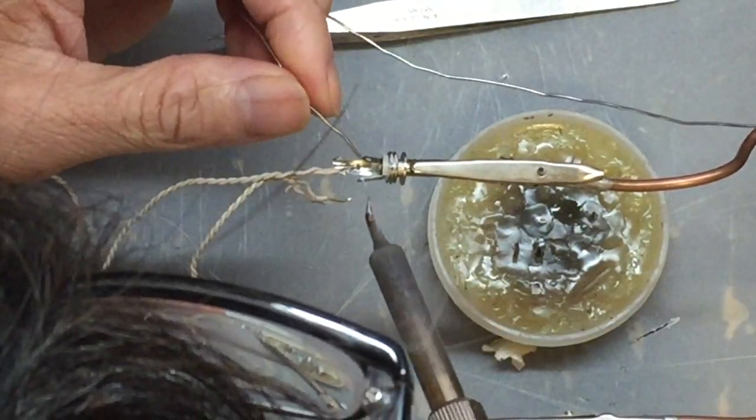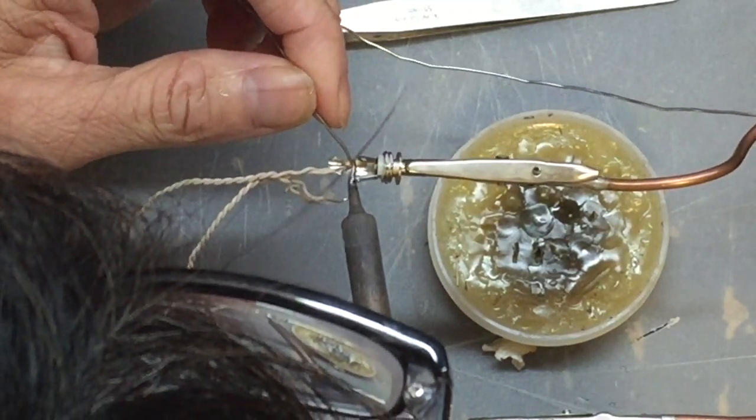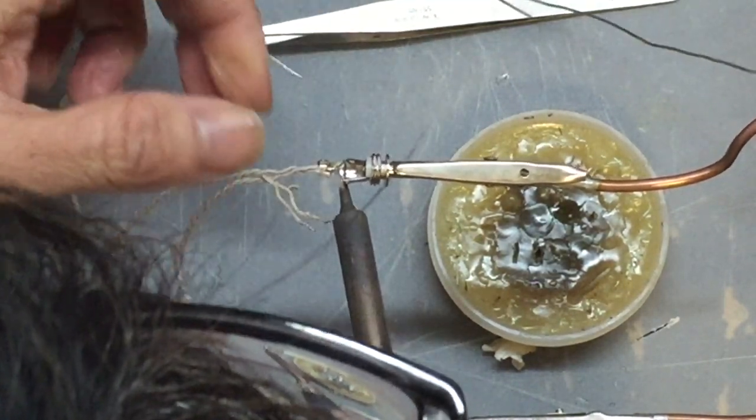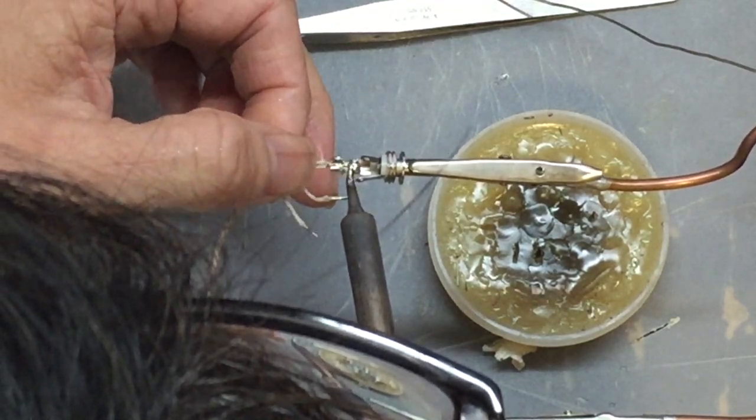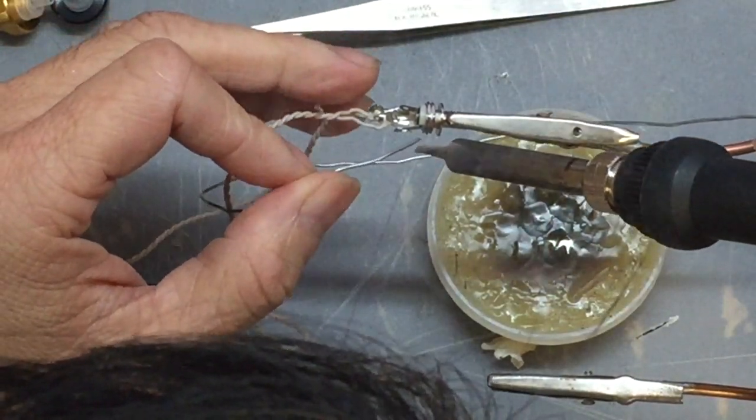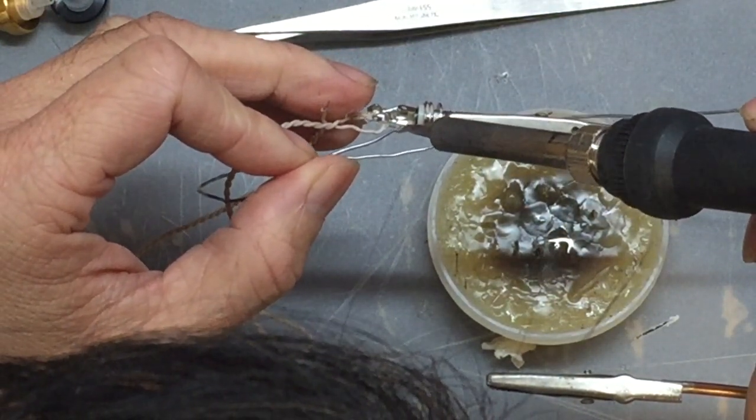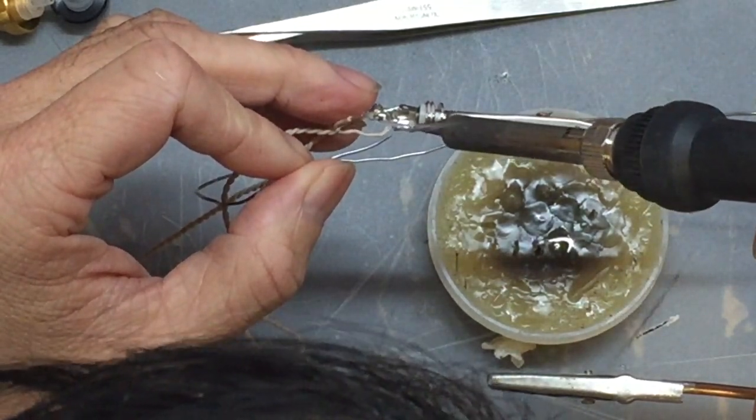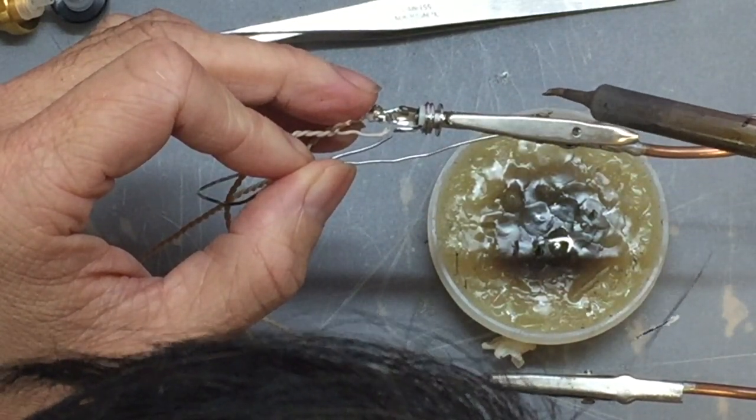Now we start the soldering into the stereo headphone jack. First we take the combined wire and solder it at the back. Then we take each of the other wires so that it is at the center and on the side connector.